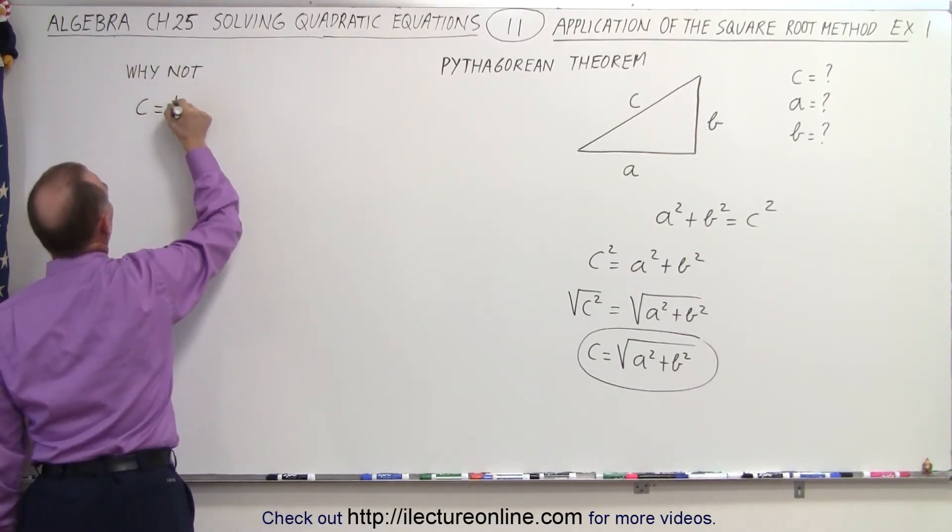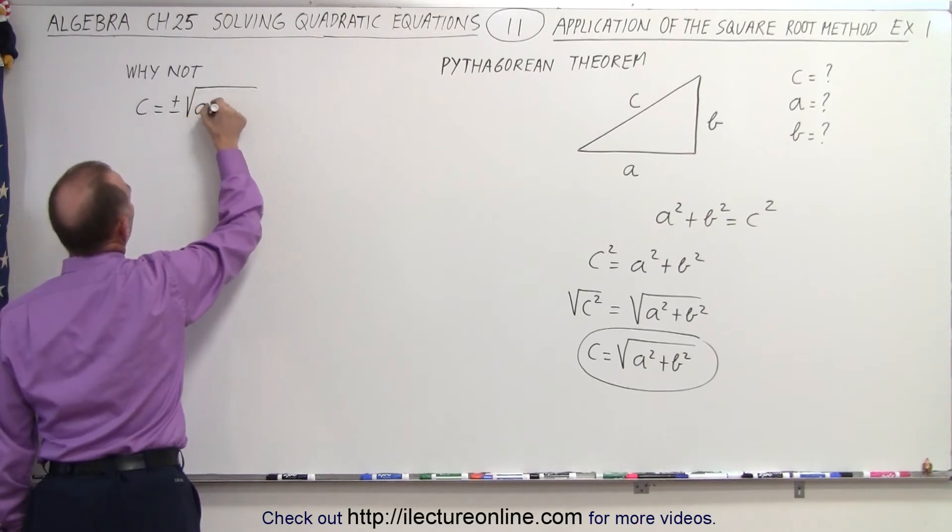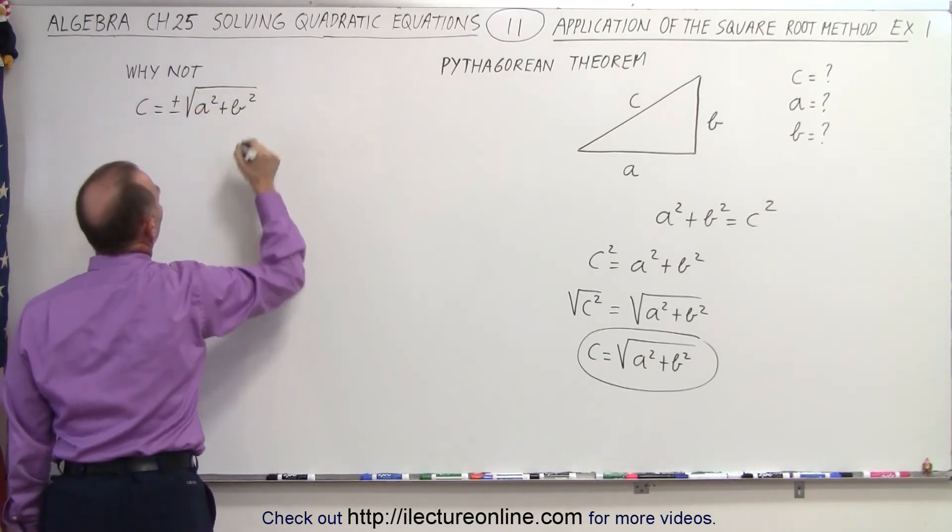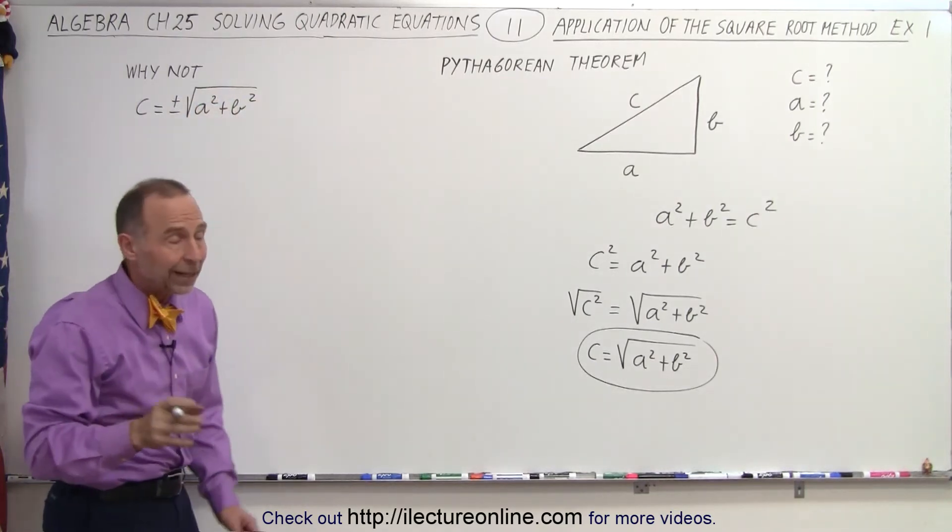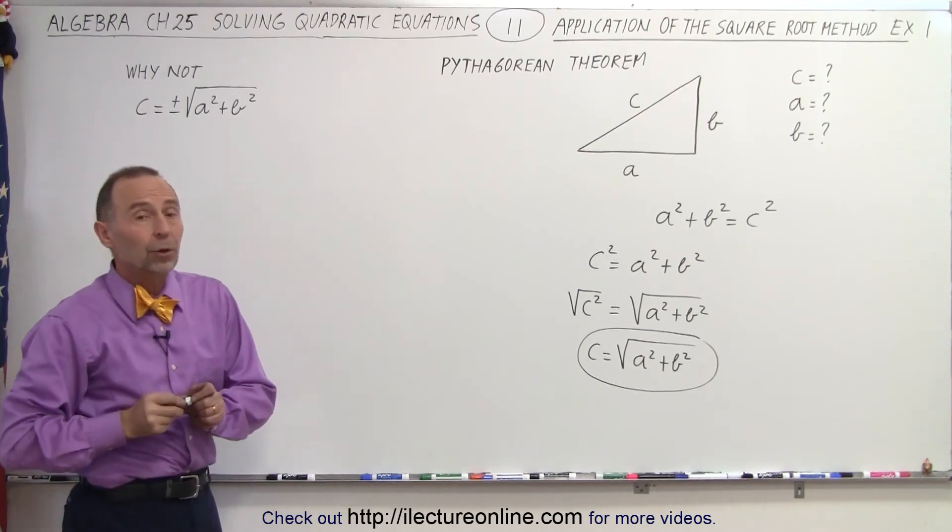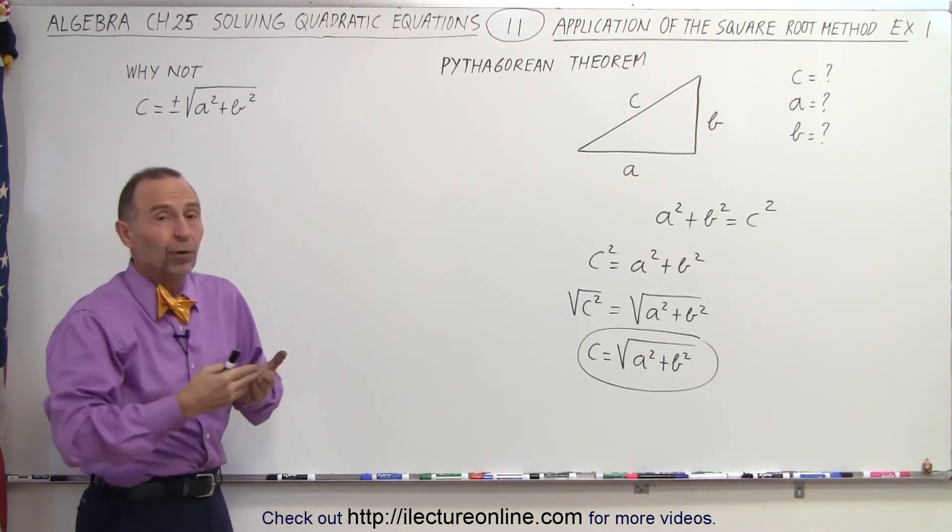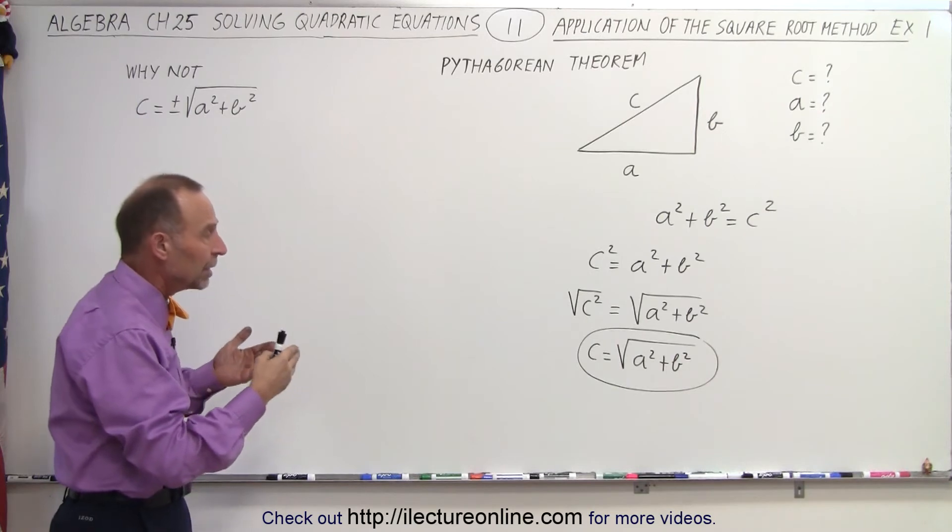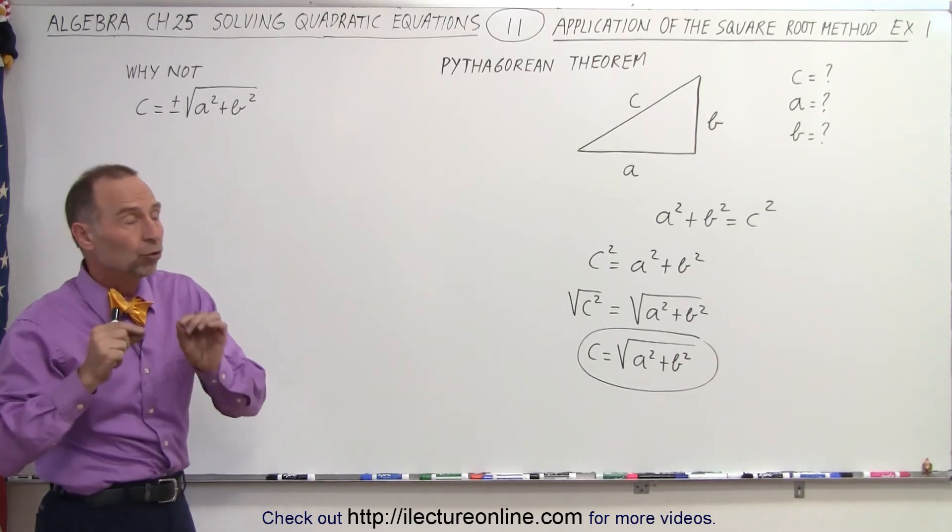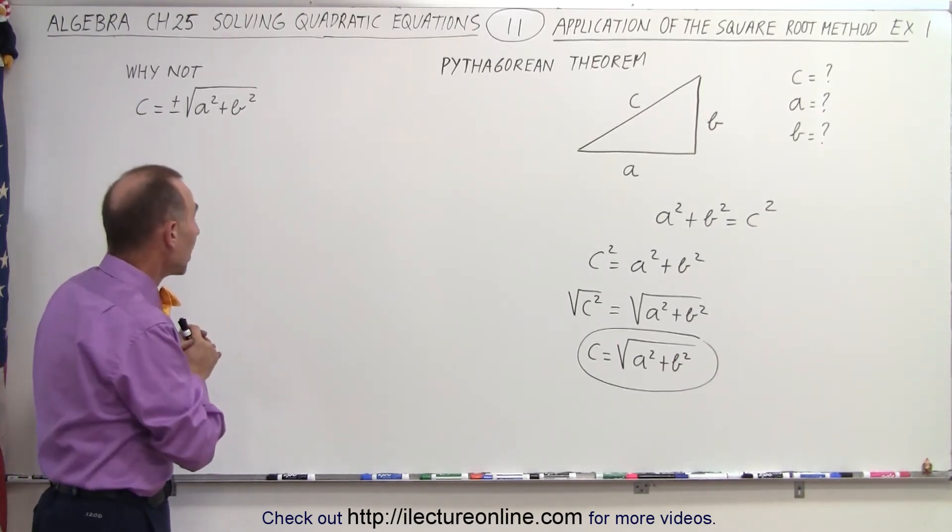c equals plus and minus the square root of a squared plus b squared. Well, even though theoretically using the quadratic equation and the square root method to solve for the two square roots, there are indeed two answers to that problem, at least from a theoretical perspective.